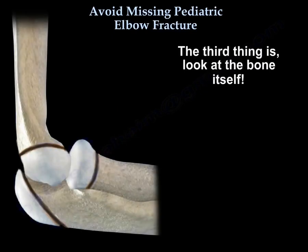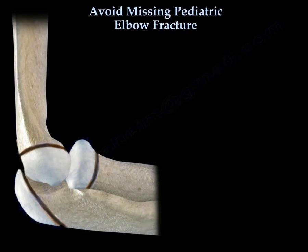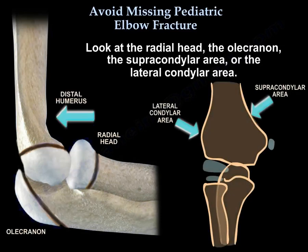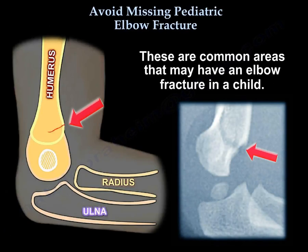Look at the bone itself — look at the surface of the bone, look for cortical breaks, and subtle or unusual angulations. Look at the radial head, the olecranon, the supracondylar area, and the lateral condylar area. These are the common areas to have an elbow fracture in a child.